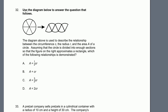Use the diagram below to answer the question that follows. The diagram is used to describe the relationship between the circumference, the radius, and the area of a circle. Assuming the circle is divided into enough sections so that the figure on the right approximates a rectangle, which relationship is demonstrated? They divide it into six wedges — like a Trivial Pursuit piece. If you made the wedges thinner, dividing into 12 or 24 wedges, it would start looking more and more like a rectangle.